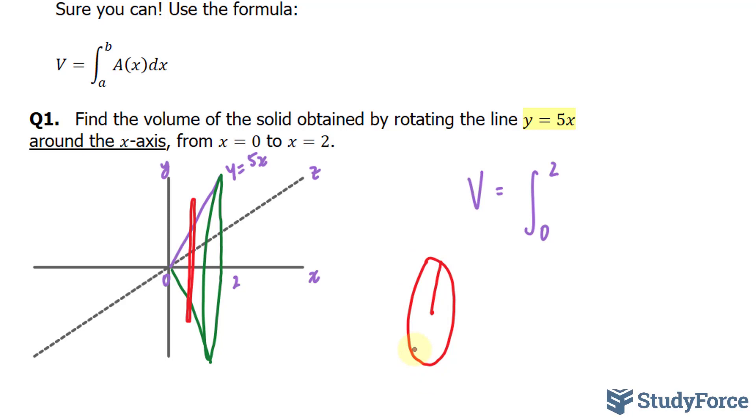And the area of a circle is pi r squared, where your r represents the line, and that line is defined as 5x.